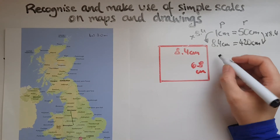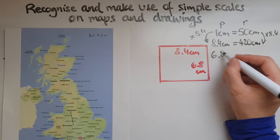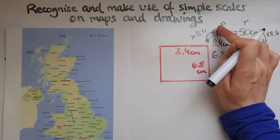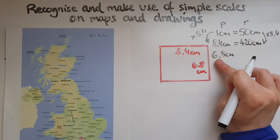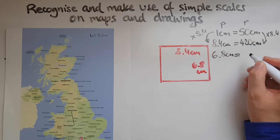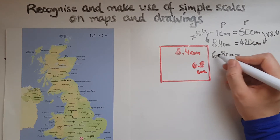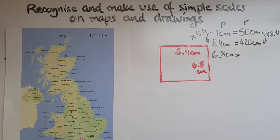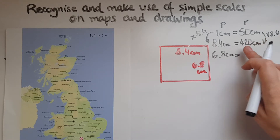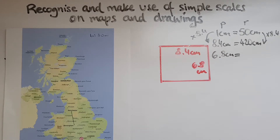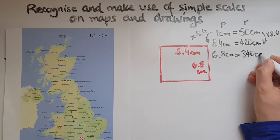Now for the width: on the plan it's 6.8 centimetres. We multiply 50 by 6.8 — since we already worked out 50 times 8.4, we now do 50 times 6.8 — which gives us 340 centimetres. So the width of the room in reality is 340 centimetres.